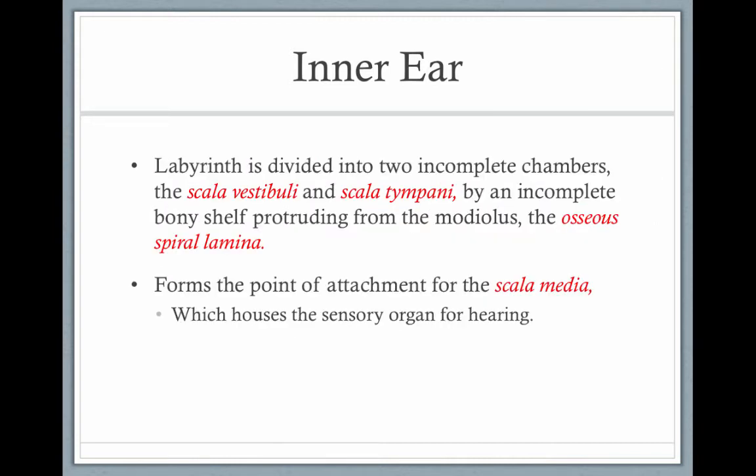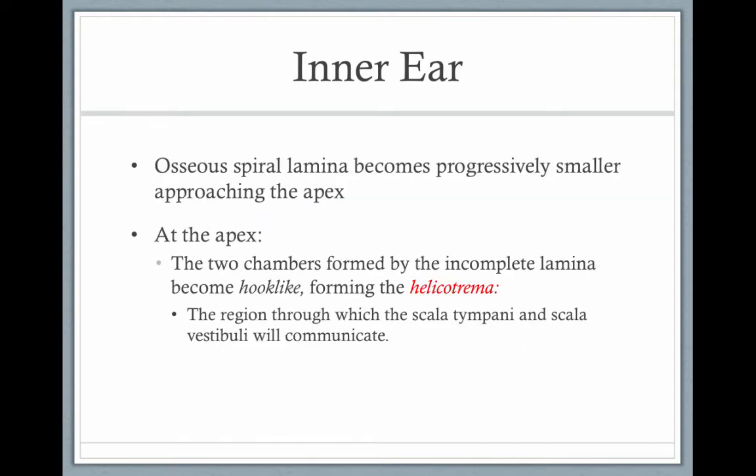The labyrinth is divided into two incomplete chambers, the scala vestibuli and the scala tympani, by an incomplete bony shelf protruding from the modiolus, known as the osseous spiral lamina. This forms the point of attachment to the scala media, which houses the sensory organs for hearing.